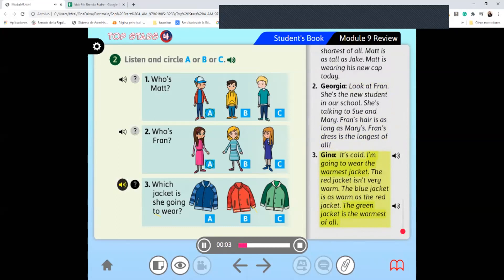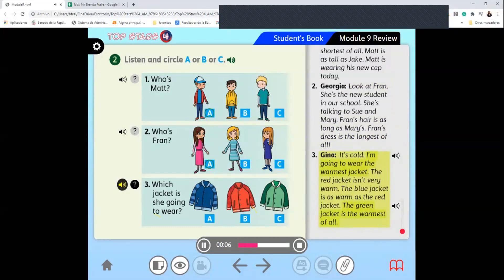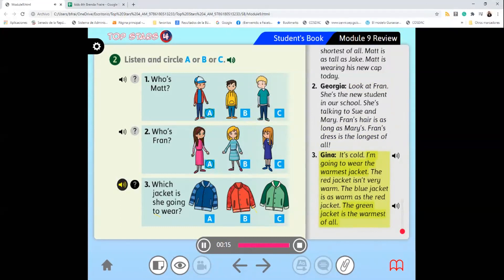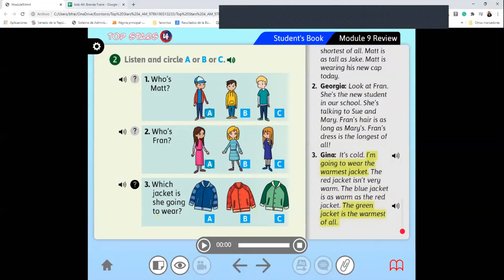'It's cold. I'm going to wear the warmest jacket. The red jacket isn't very warm. The blue jacket is as warm as the red jacket. The green jacket is the warmest of all.' He is referring to the green jacket. Copy your answers, please, and then continue with the next exercise.